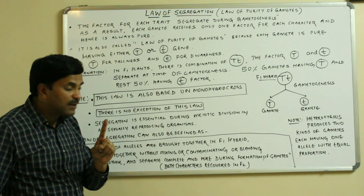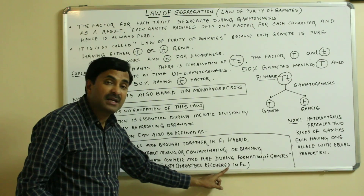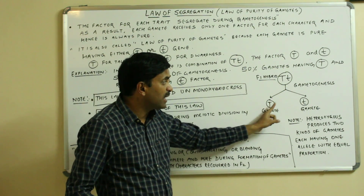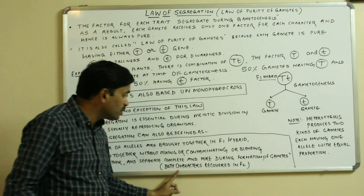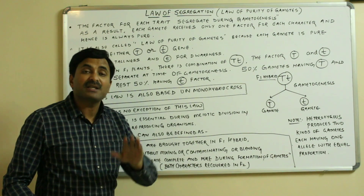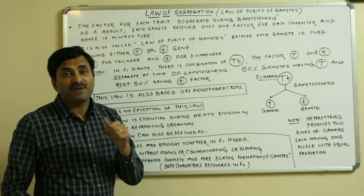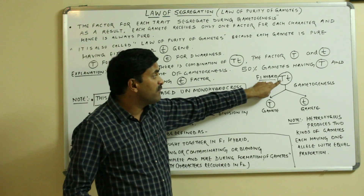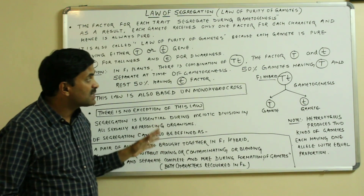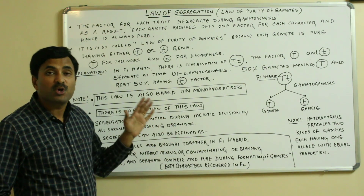The very important thing to notice is that both characters are recovered in the F2 generation, because at the time of gametogenesis both have been separated. So both the dominant as well as the recessive character will be recovered in the F2 generation, whereas in F1 generation only one of the characters was expressed. This is the law of segregation — a very important law having no exception.